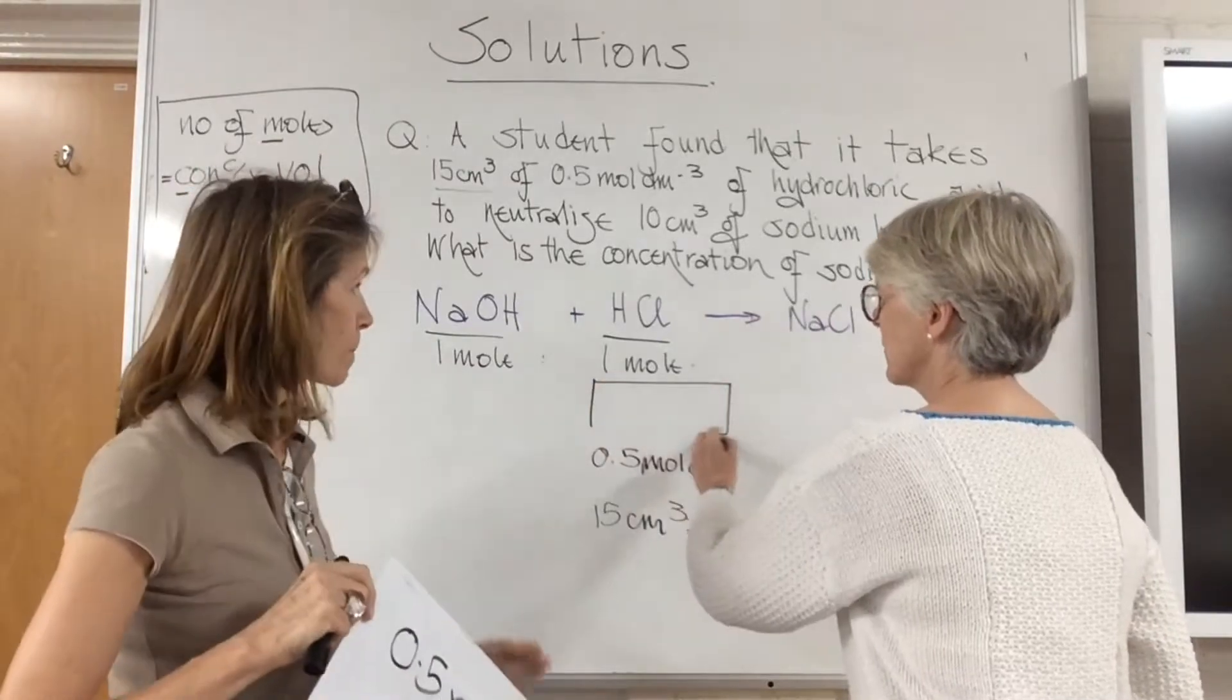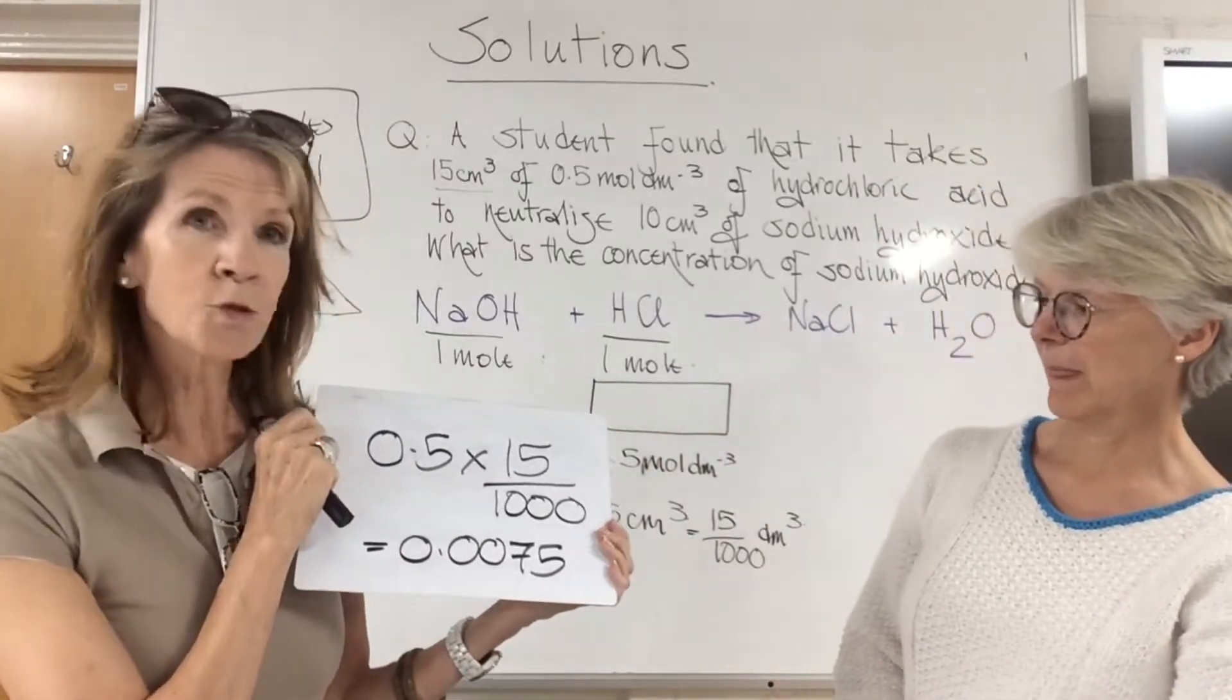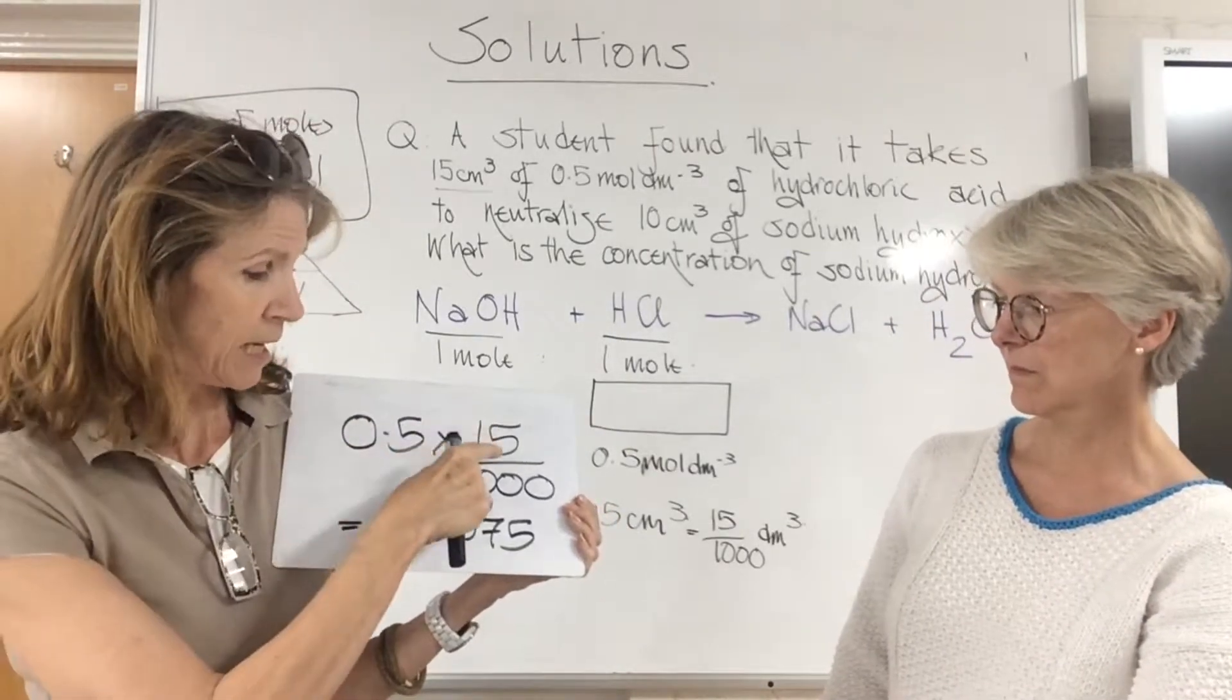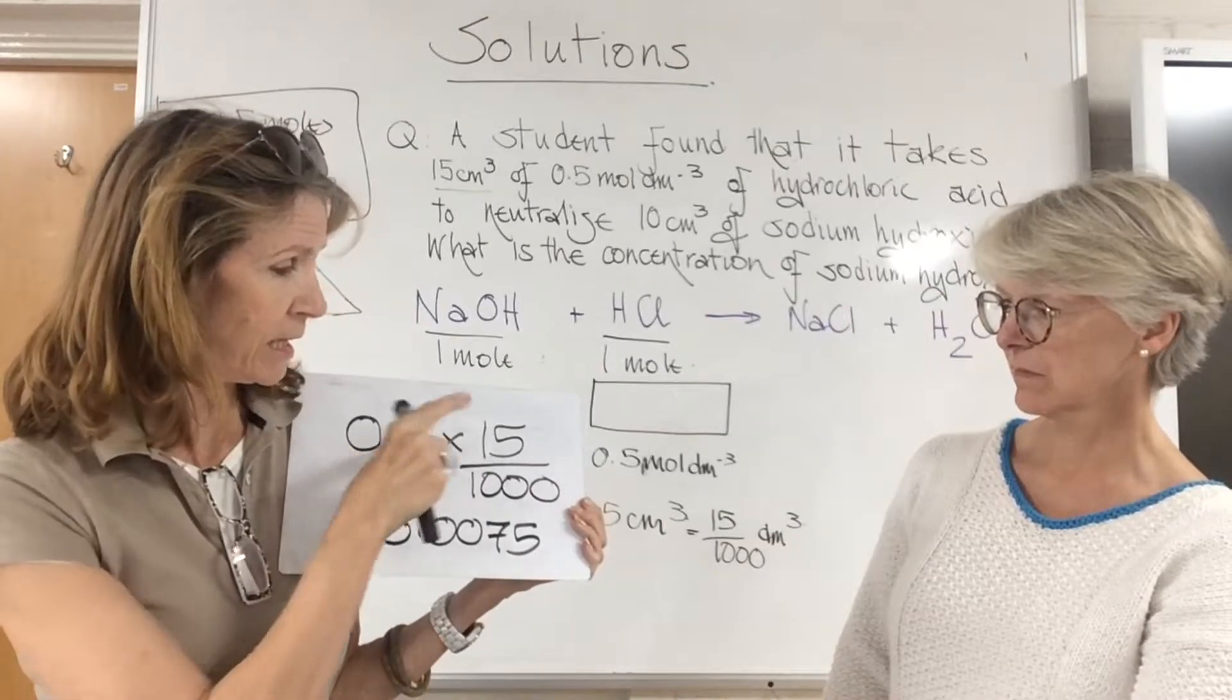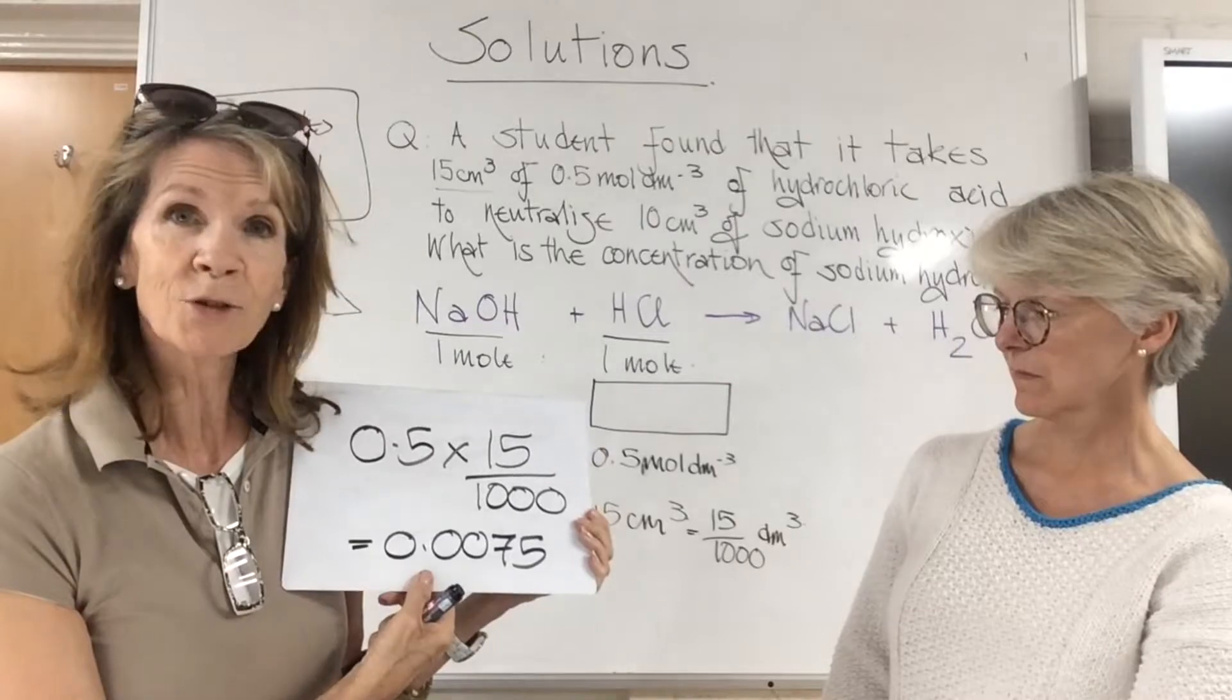Then I'm going to be using your formula, so m equals c times v. The number of moles would be the concentration times the volume, so that is c times v, and that gives you the number of moles which is 0.0075.